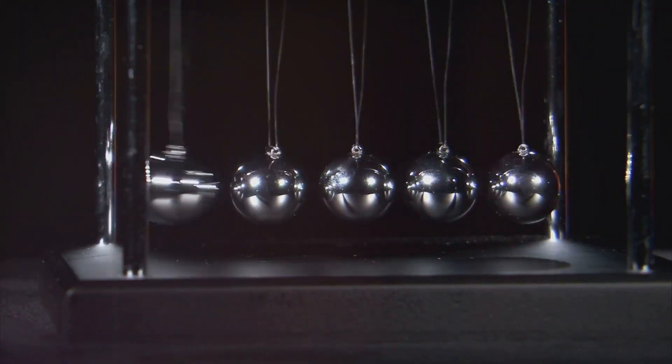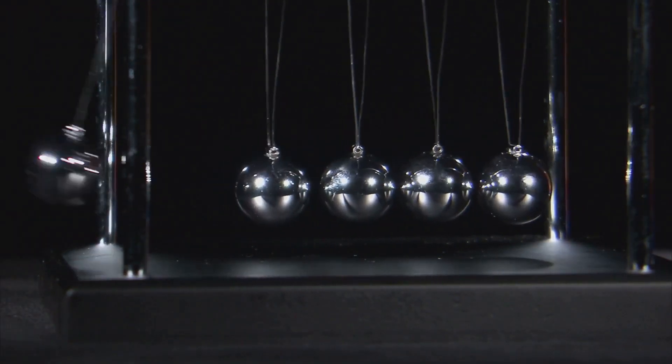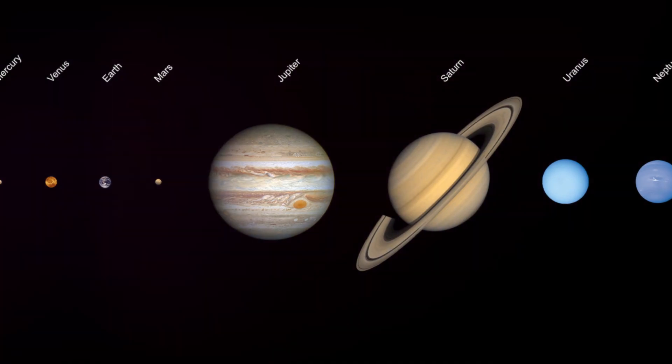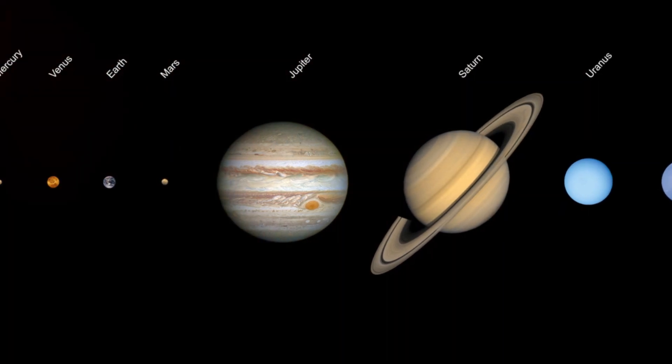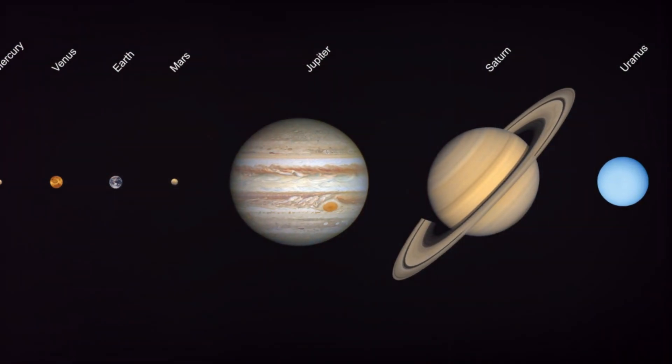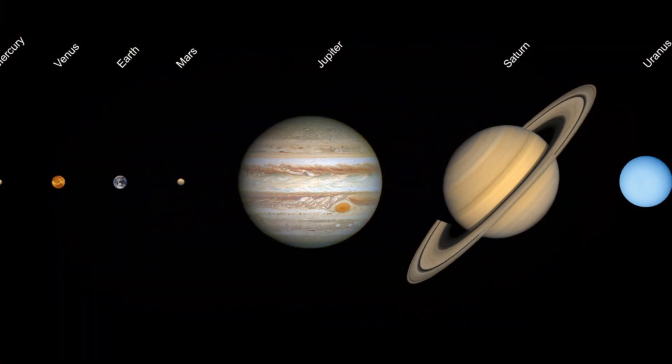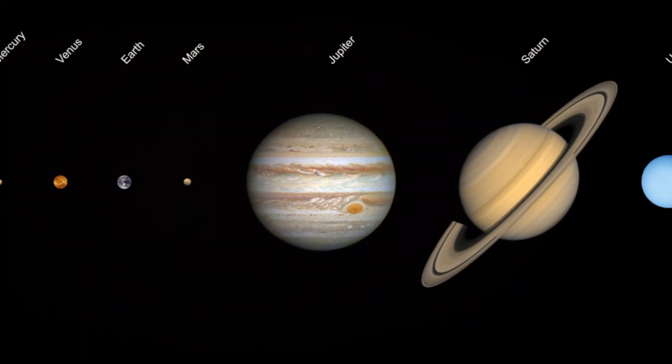The laws of physics and gravity also support the idea of a spherical Earth. Gravity pulls matter towards its center, creating a spherical shape. This is not exclusive to Earth. All celestial bodies, including other planets, are spherical too.